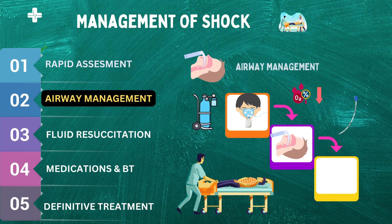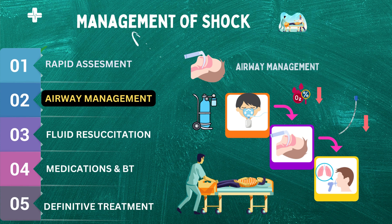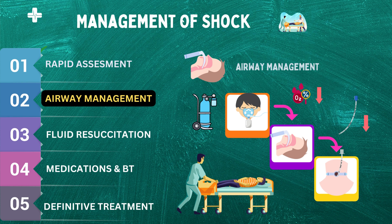One such technique is the placement of an endotracheal tube (ETT), a tube inserted through the mouth or nose and into the trachea to provide a patent airway. However, in patients in shock, ETT placement can be challenging due to the potential for hypotension and decreased cardiac output. In these cases, healthcare professionals may consider alternative techniques such as a supraglottic airway device (SGA) or a cricothyrotomy. An SGA is inserted through the mouth and sits above the glottis, while a cricothyrotomy involves making an incision in the neck and inserting a tube directly into the trachea. Improper airway management can lead to complications such as hypoxia, hypotension, and cardiac arrest.